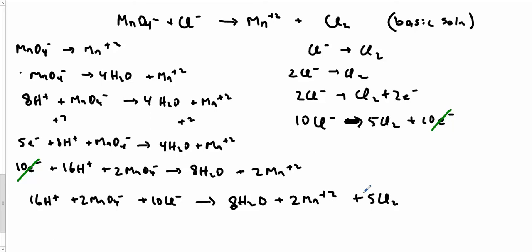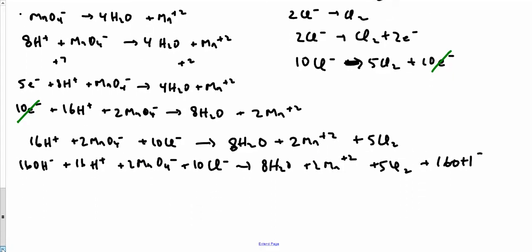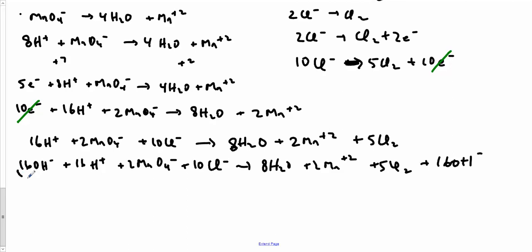Now is where the basic solution comes into play. However many H pluses I have, I'm going to add that many OH minuses to both sides. So I'm going to get 16OH minus, 16H plus. And here's the key idea, it's turning it basic now. So 16OH minus and 16H plus is going to give me 16 waters.